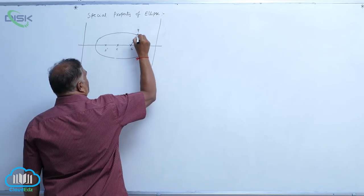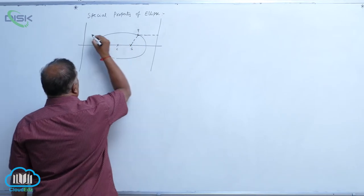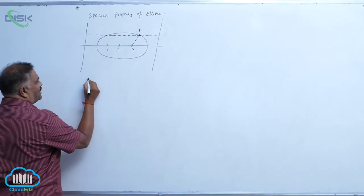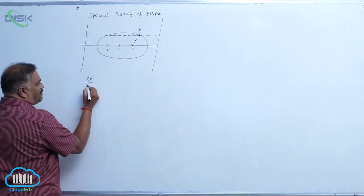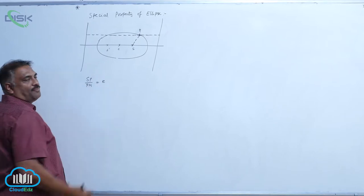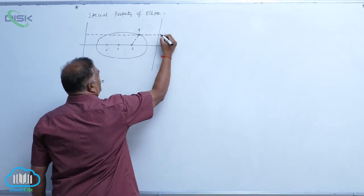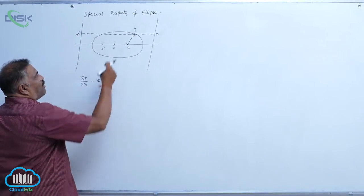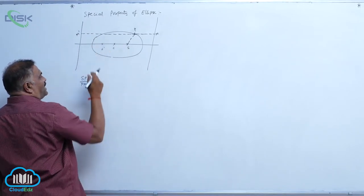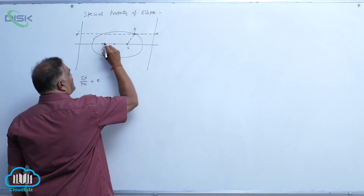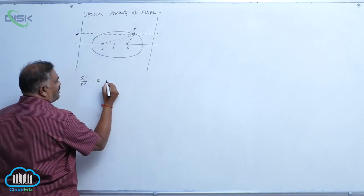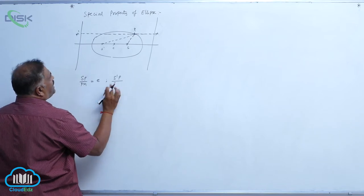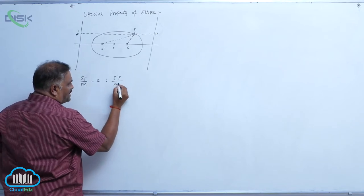Now join these two lines like this. We know that SP by PM is equal to E. This is M, and this is also M dash. One more: S dash P — if you take this focus, it will become S dash P by P M dash is equal to E.